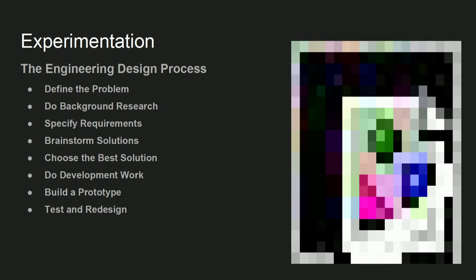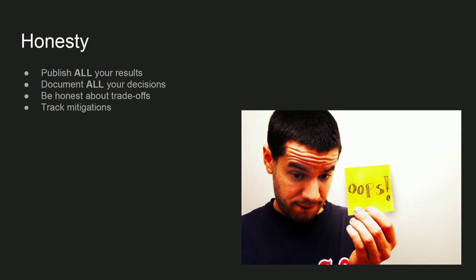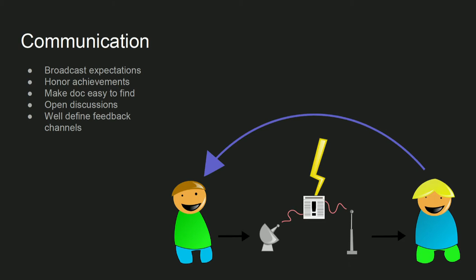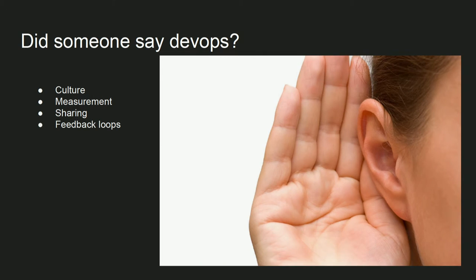There's no system that lives in isolation. Complex system interactions can sometimes cause very unexpected behaviors. Without experiments, we have no way to qualify our assumptions about how those interactions are going to behave. Publish everything, whether you meet your expectations or not. Document your decisions and make sure other people are able to review them, being very honest about the trade-offs you make. Broadcast cultural expectations repeatedly if needed. Have open meetings so other people can share their insights, and clearly define positive and negative feedback channels so everyone knows how to provide input.